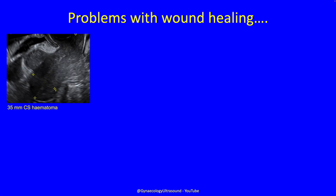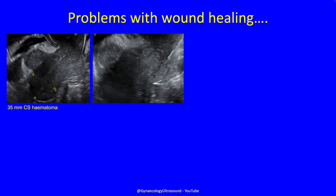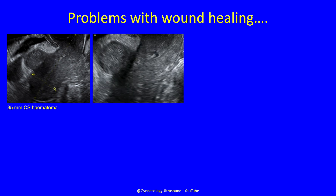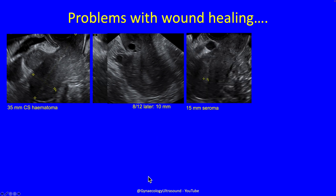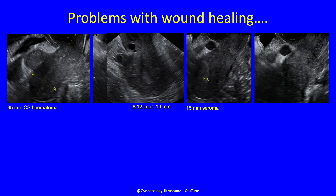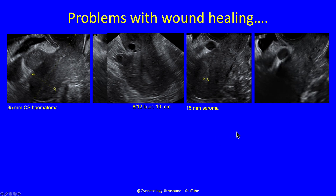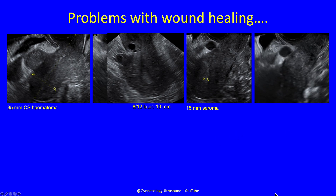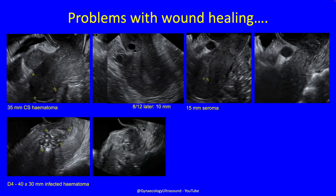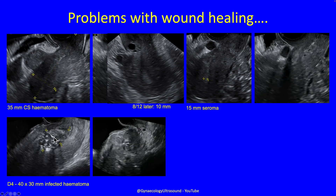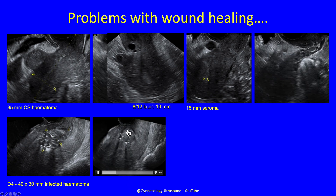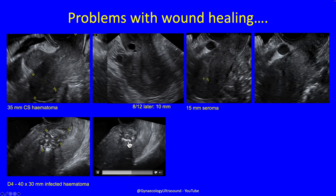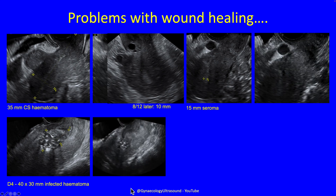Sometimes you get problems with wound healing. This patient had a 35 mm caesarean section hematoma, and sometimes these heal as fibrous tissue — in this case it became very small. This patient ended up with a small seroma at the site of her section scar. This patient had an infected hematoma: you can see air and suture material, clearly at the site of the caesarean section, with brightly echogenic air — so there's an abscess.